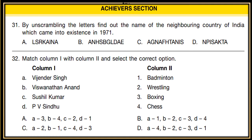Question 32: Match Column 1 with Column 2 and select the correct option. Some names are given in Column 1 and some sports in Column 2. Associate each name with their sport: Vijendra Singh — boxing; Viswanathan Anand — chess; Sushil Kumar — wrestling; PV Sindhu — badminton. Choose the correct matching.